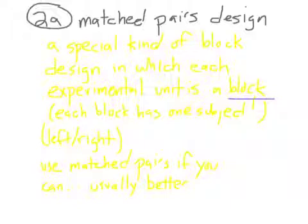Usually for a matched pairs design, each block has one subject or one experimental unit. Very often it's like left, right, front, back, something like this. And within a matched pairs design, you compare the difference within each person.